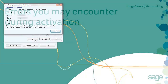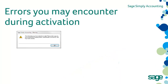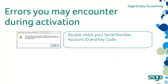You may get an error. If you do, double check your serial number, account ID, and key code against the information in your email. If the information you entered matches the information in your activation email, please contact our service line at 1-888-222-8985.